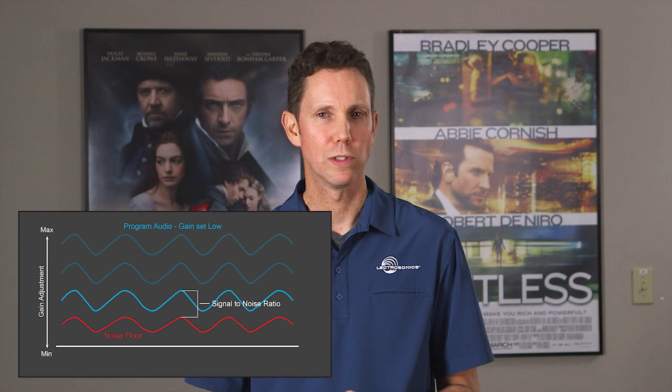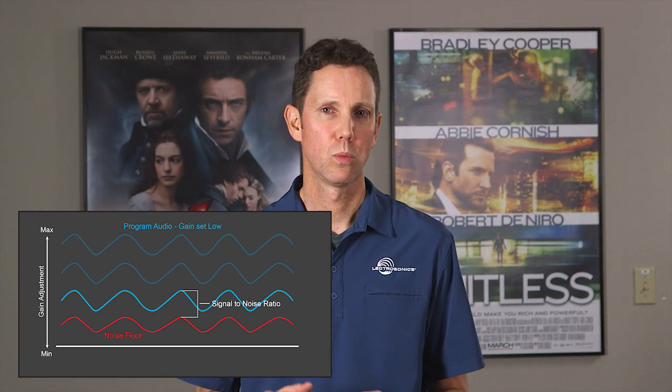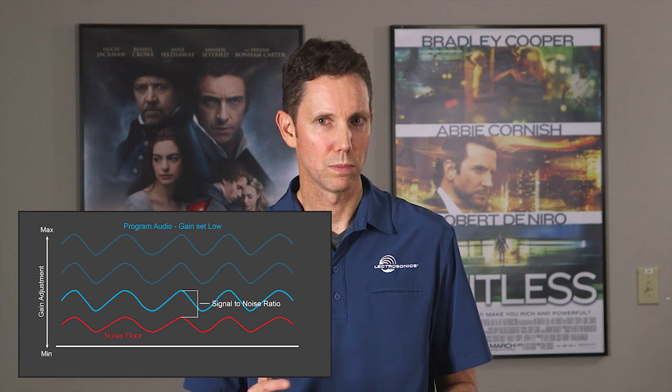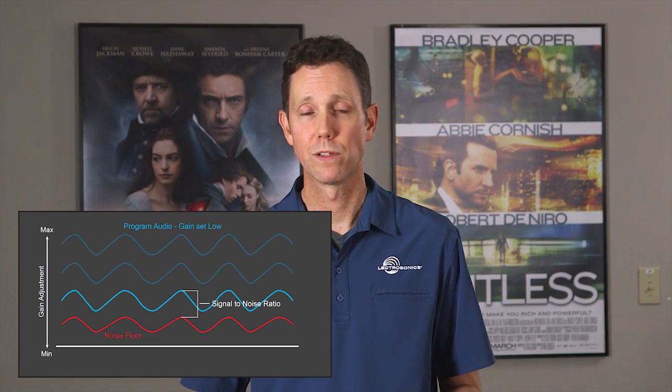Believe it or not, too low of a gain setting on your transmitter can actually affect your operating range with the wireless system. Most systems today have a squelch based not only on Pilotone, but on SINAD — signal-to-noise and distortion. So when the signal-to-noise ratio is too low, the receiver will cut off the audio to prevent dropouts and loud noise events, and therefore your range suffers.